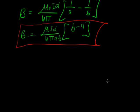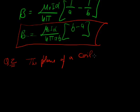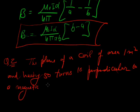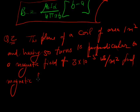Now come to the next numerical problem. Question number 2. The plane of a coil of area 1 meter square and having 50 turns is perpendicular to a magnetic field of 3 times 10 raised to the power minus 5 Weber per meter square. Find the magnetic flux.